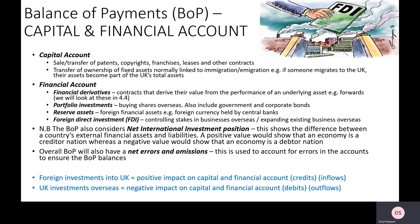The capital account deals with the transfer of ownership of assets. For example, if foreign people move into the UK and buy property, they're buying British assets — an inflow. We also look at the transfer of ownership of patents and copyrights: if a UK firm invents new technology and a foreign firm buys it, that's a transfer of ownership to a foreign person and an inflow of money. The financial account looks at investment linked to business activity.